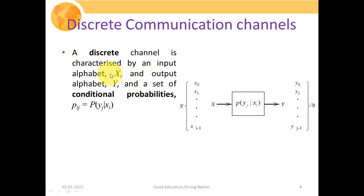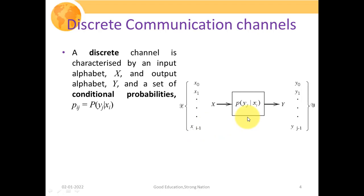A discrete channel is characterized by input alphabet X and output alphabet Y, and the set of conditional probabilities P(i,j) = P(Yj | Xi), that is the probability of receiving symbol Yj when symbol Xi was transmitted. X and Y are two random variables modeling the symbols transmitted and received. At the source site we have a source generator producing symbols X0, X1, X2, ..., X(I-1), and at the receiving site, represented by random variable Y, we obtain symbols Y0, Y1, Y2, ..., Y(J-1). This is the schematic of a discrete communication channel.